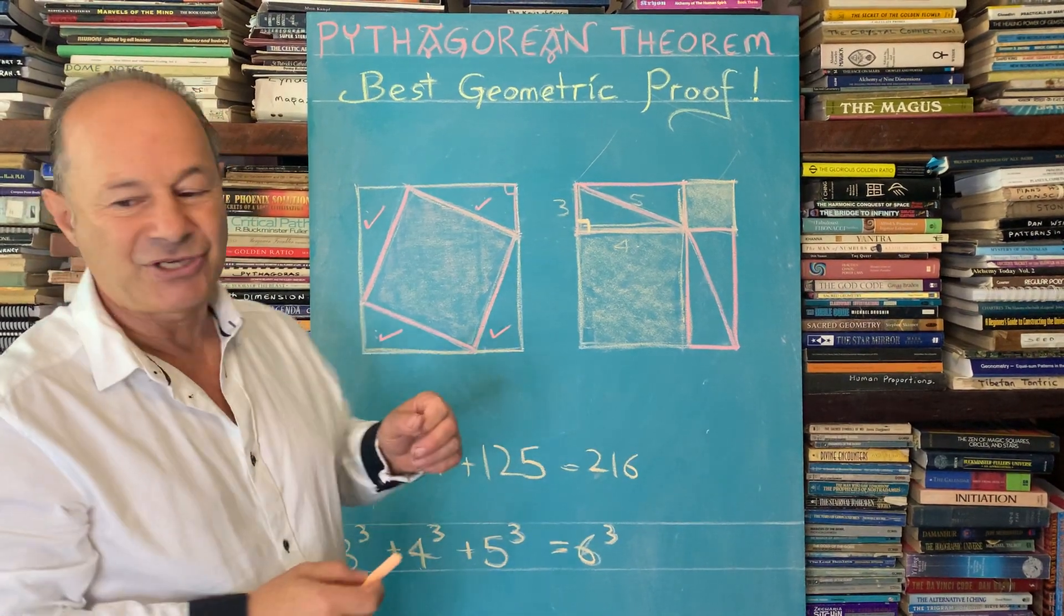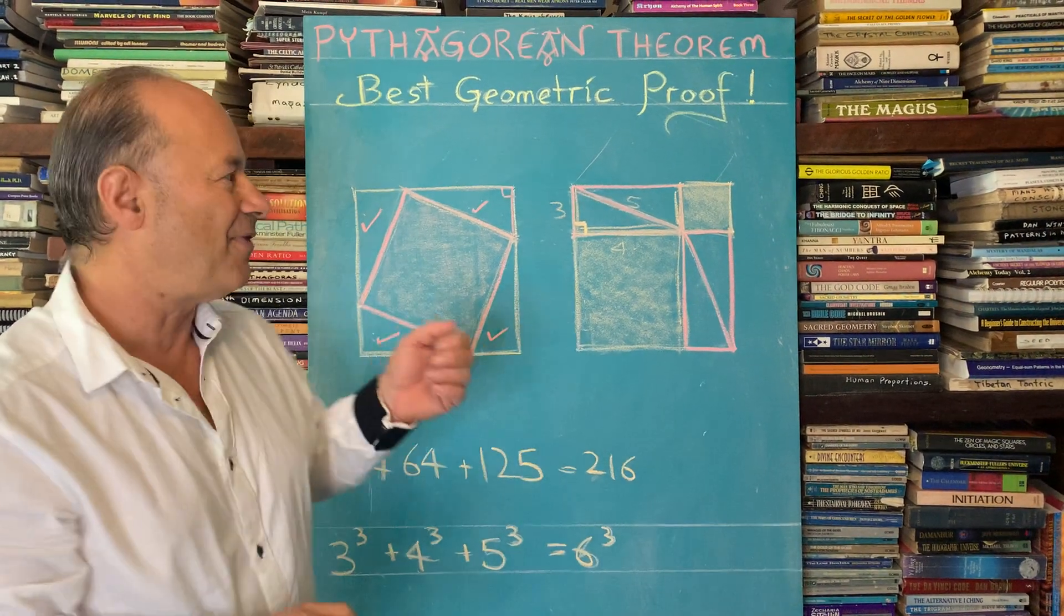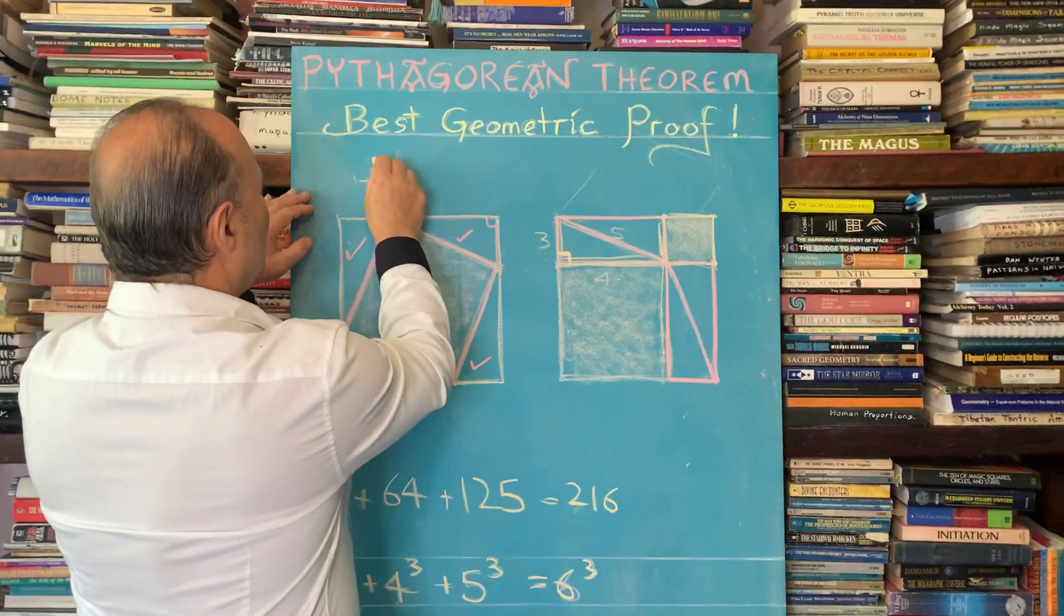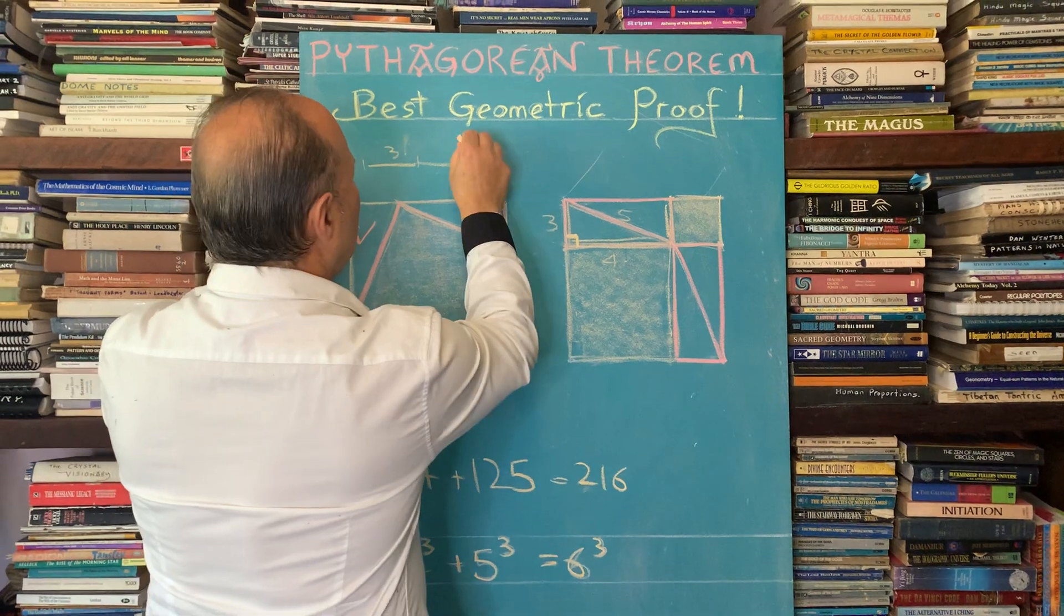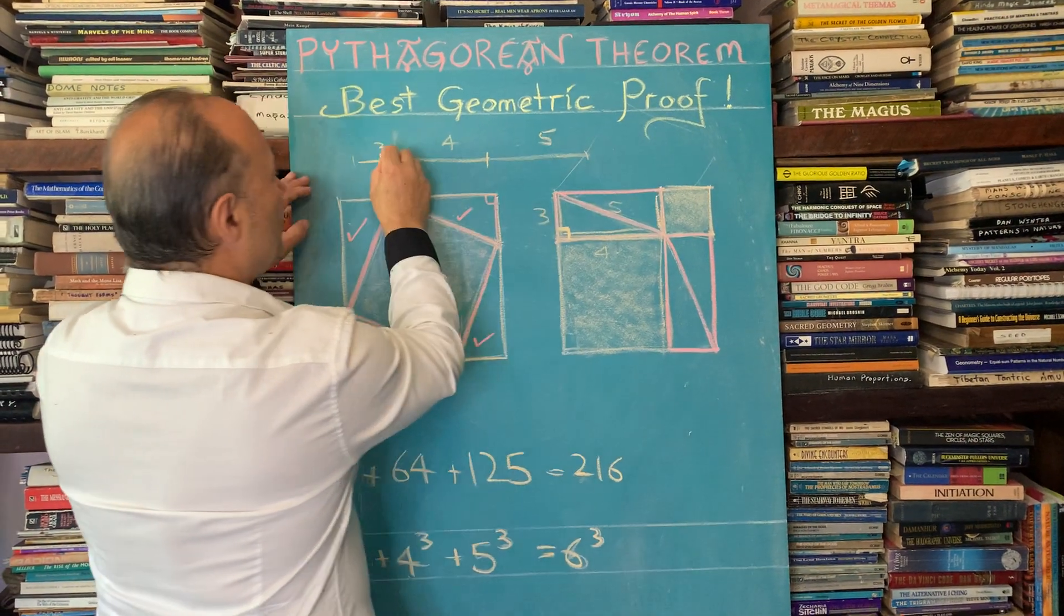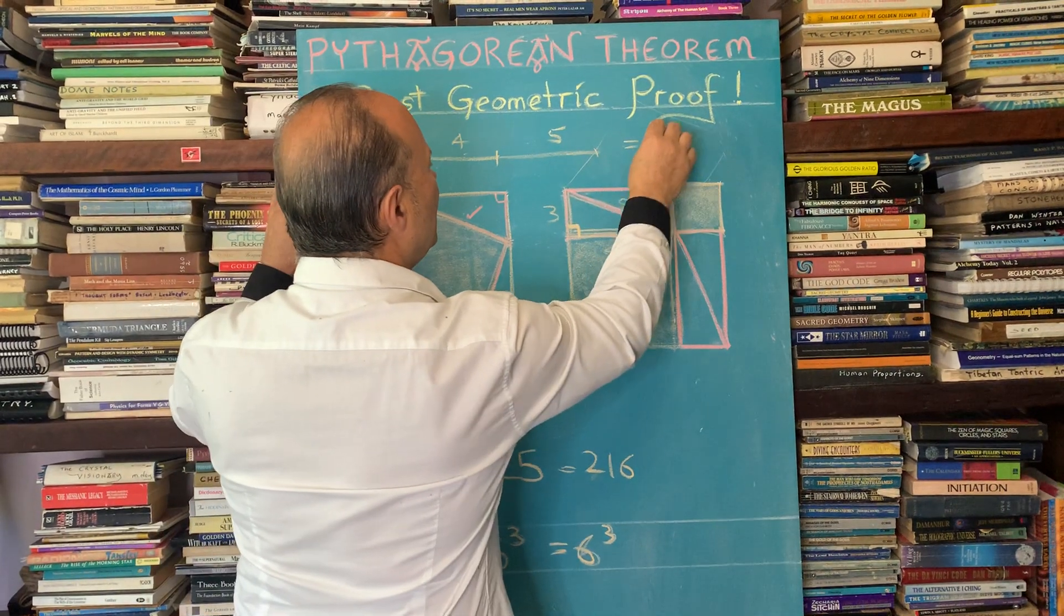So the ancient Egyptians used this 3-4-5 triangle. They took the three and they added the four here and they added the five. And the sum of the three plus the four plus the five is twelve.